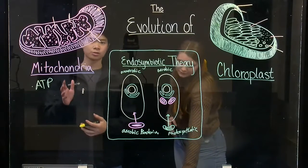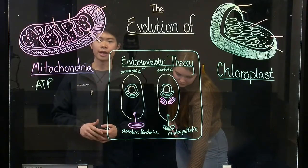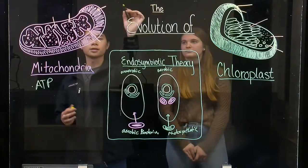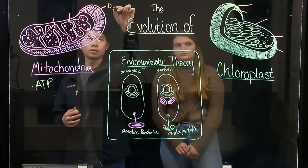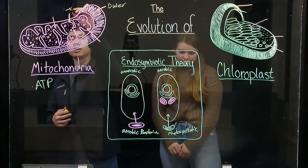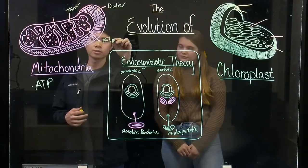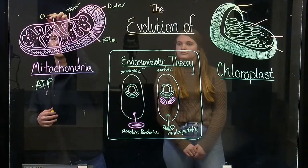If we look at the structure of the mitochondria and how it relates to a prokaryote, which is explained by the endosymbiotic theory, it has a double membrane with an outer and inner, it has ribosomes, and it has circular DNA.